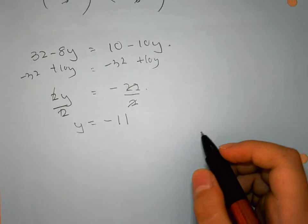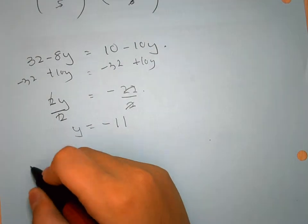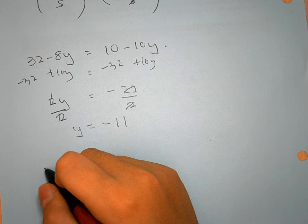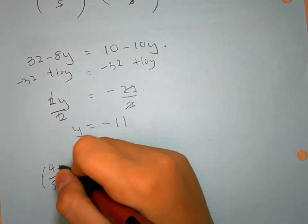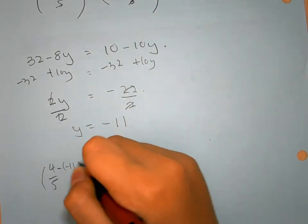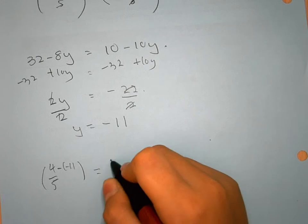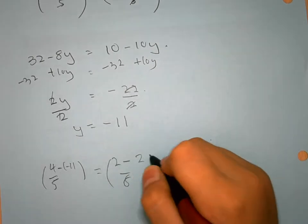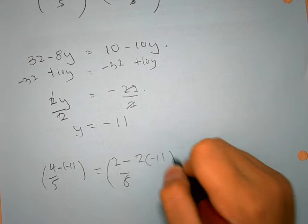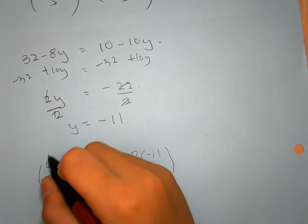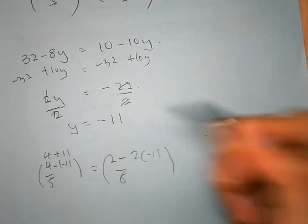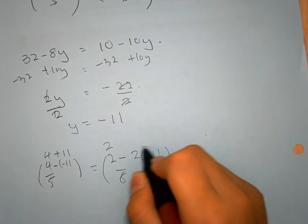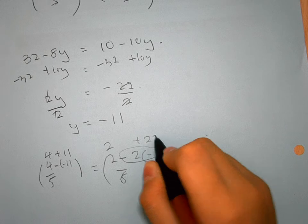Now I'm going to check. So substituting negative 11, it becomes 4 minus negative 11 over 5 equals 2 minus 2 times negative 11 over 8. This becomes 4 plus 11, and this becomes 2 plus 22.